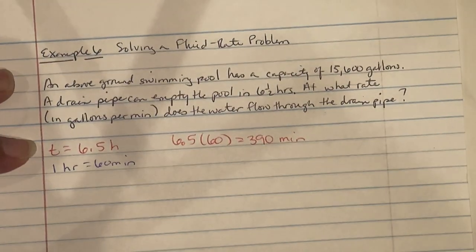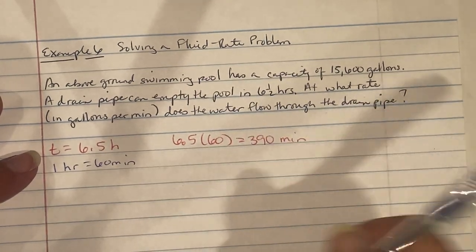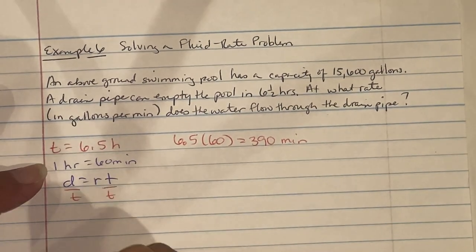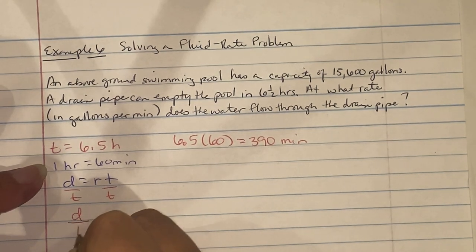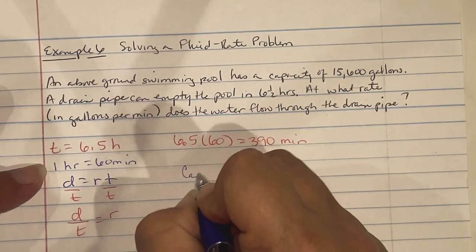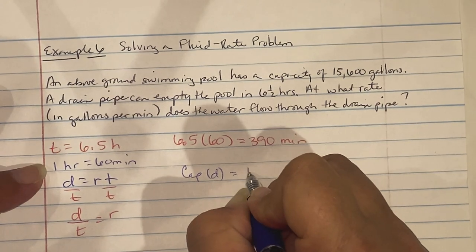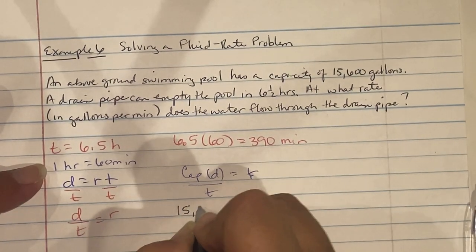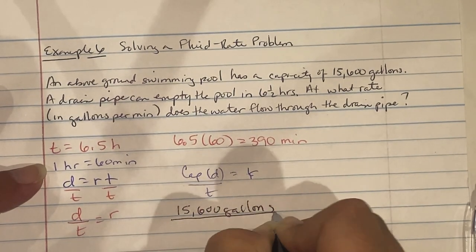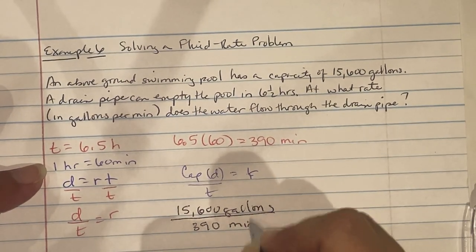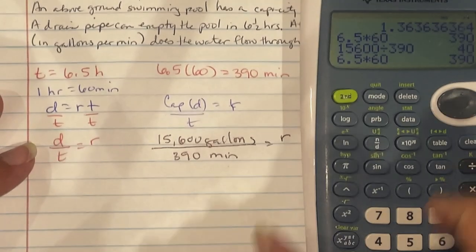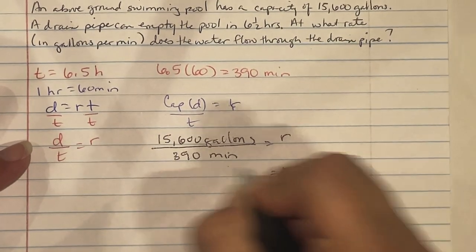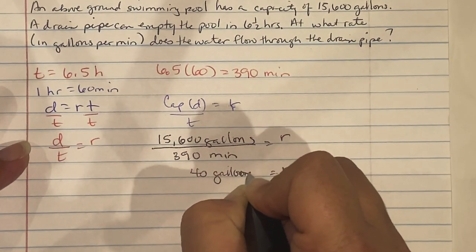Now they want our rate. Think of the capacity being the same thing as distance. So we're going to look at it as distance equals rate times time. I want my rate, so I'm dividing both sides by time. So the distance, in this instance capacity, divided by time is our rate piece. Our capacity, which is the same as distance, divided by time gives us our rate. We have 15,600 gallons over 390 minutes. So now I'm in the ratio of gallons per minute equals our rate. So you're going to do 15,600 divided by 390 and we get 40. So it's 40 gallons per minute is our rate.